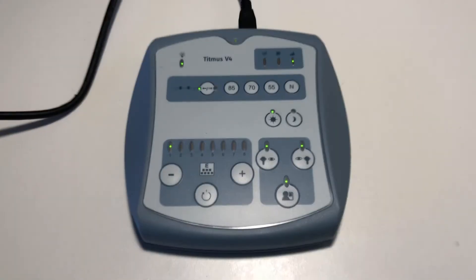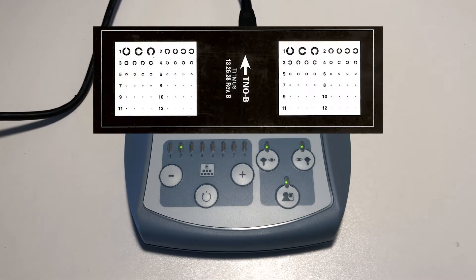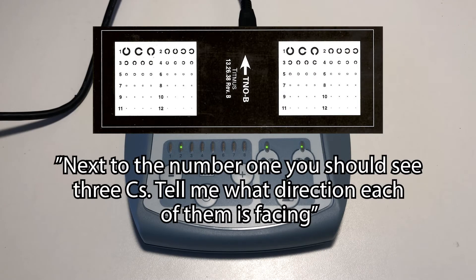Advance the slide to number two by pressing the plus sign on the control panel. This slide tests for visual acuity in both eyes. Say to the patient, next to the number one you should see three C's. Tell me what direction each of them is facing.